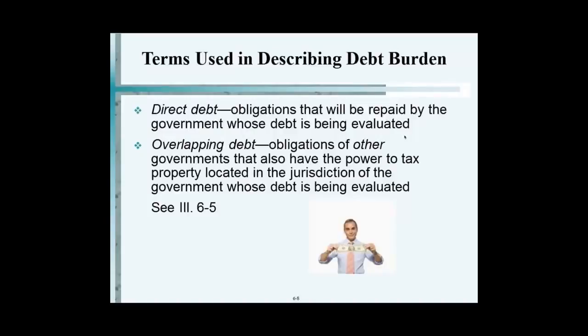It could be 1%, it could be 5%, whatever that number is. But 1% of what? 1% of the total value of property in that town. So if you had $100 million worth of property and it was 1%, you could only borrow a million. You borrowed half a million — that $1 million is called the debt limit. What's your limit? $1 million. You borrowed half a million. What's left? Another half a million. That's your debt margin — what you have left.